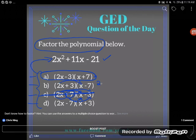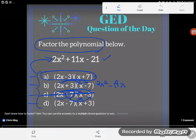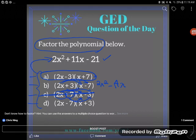2x times x is 2x squared. 2x times negative 7 is negative 14x. Positive 3 times x is positive 3x. Positive 3 times negative 7 is negative 21. Now I do get my 2x squared and I do get my negative 21 but look at my middle term this time.